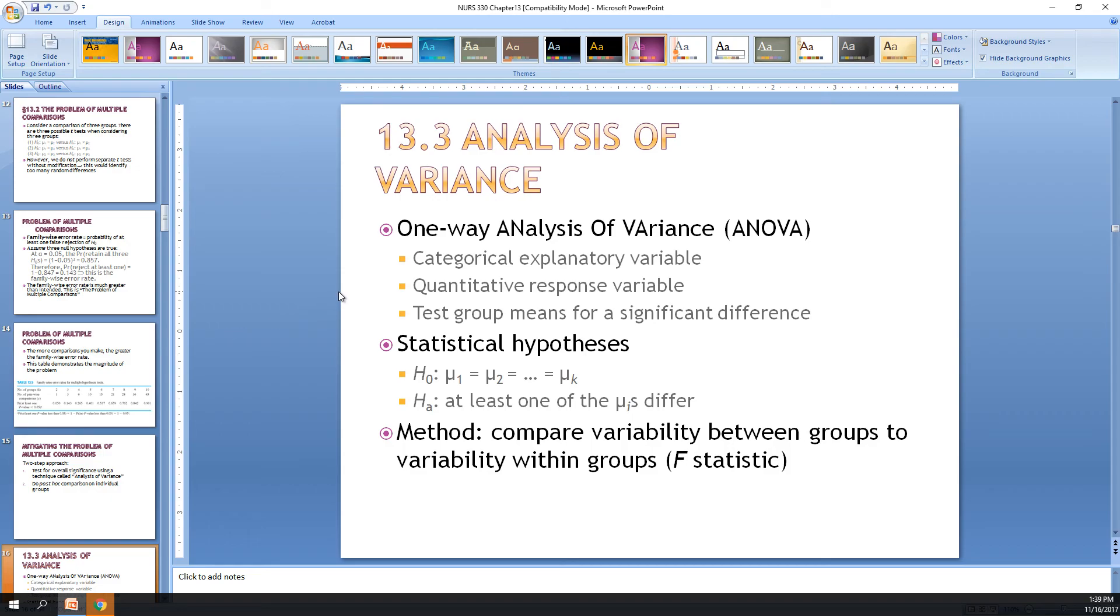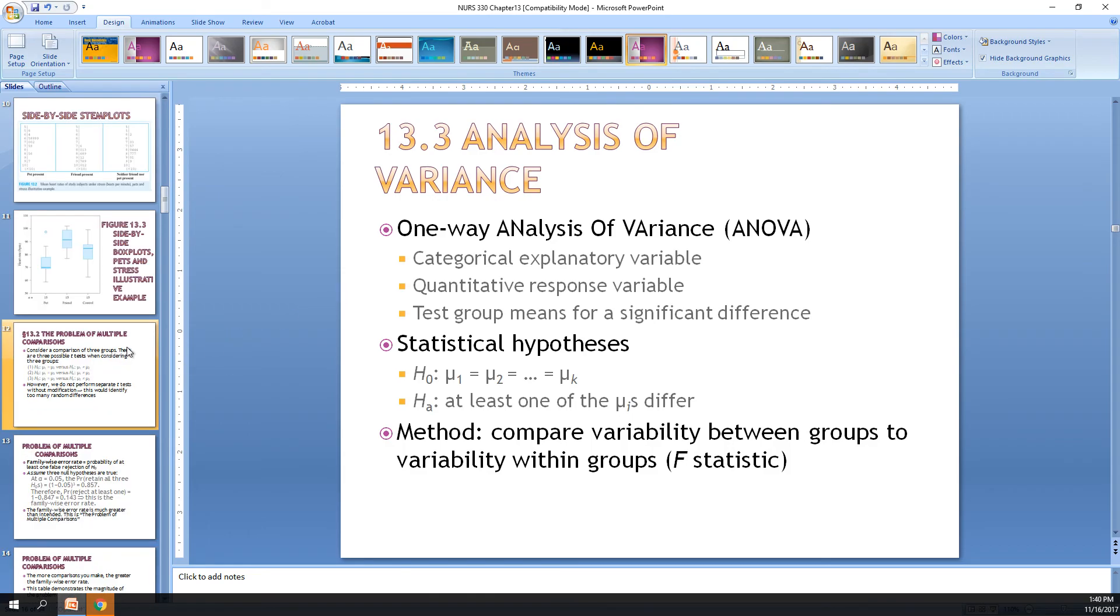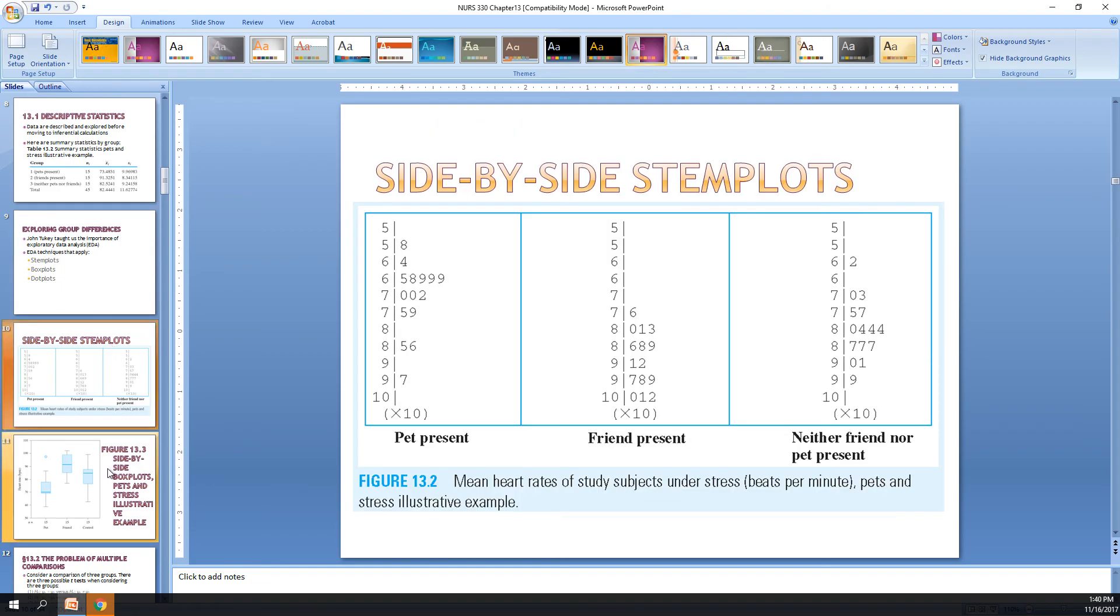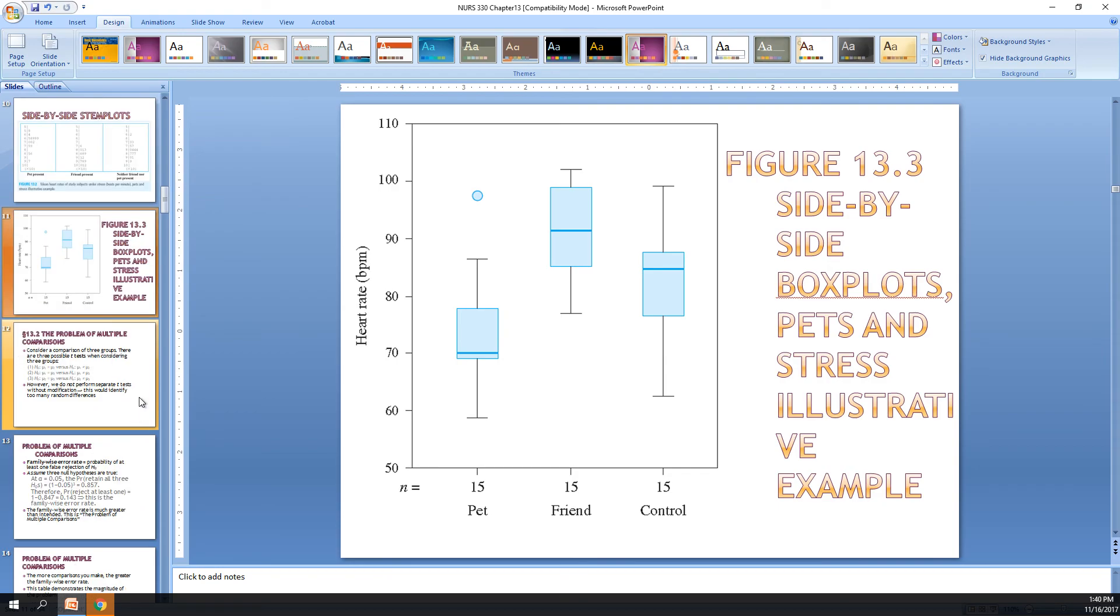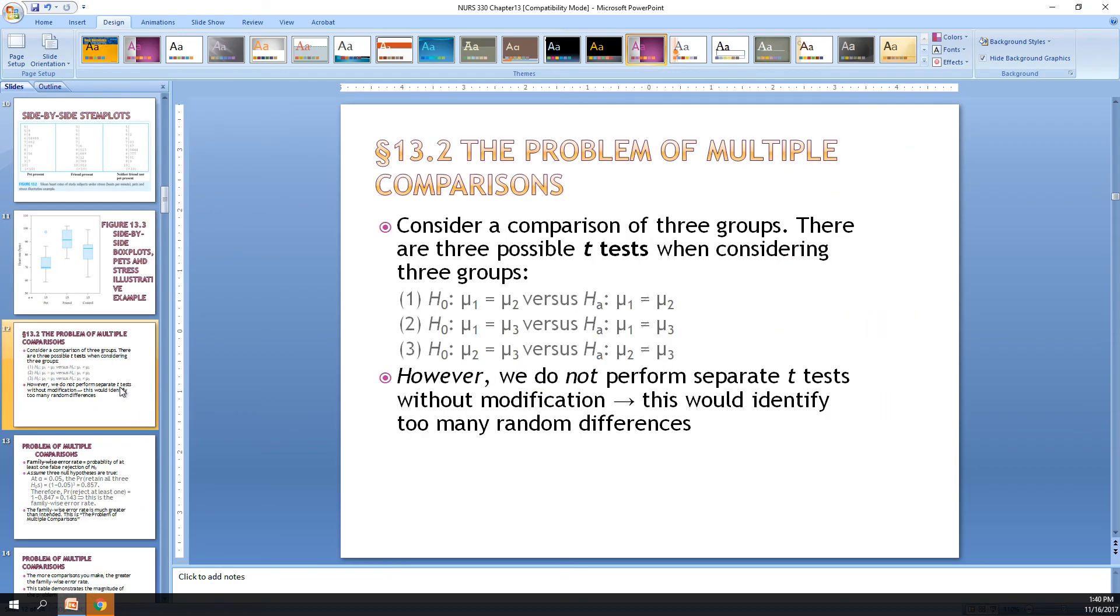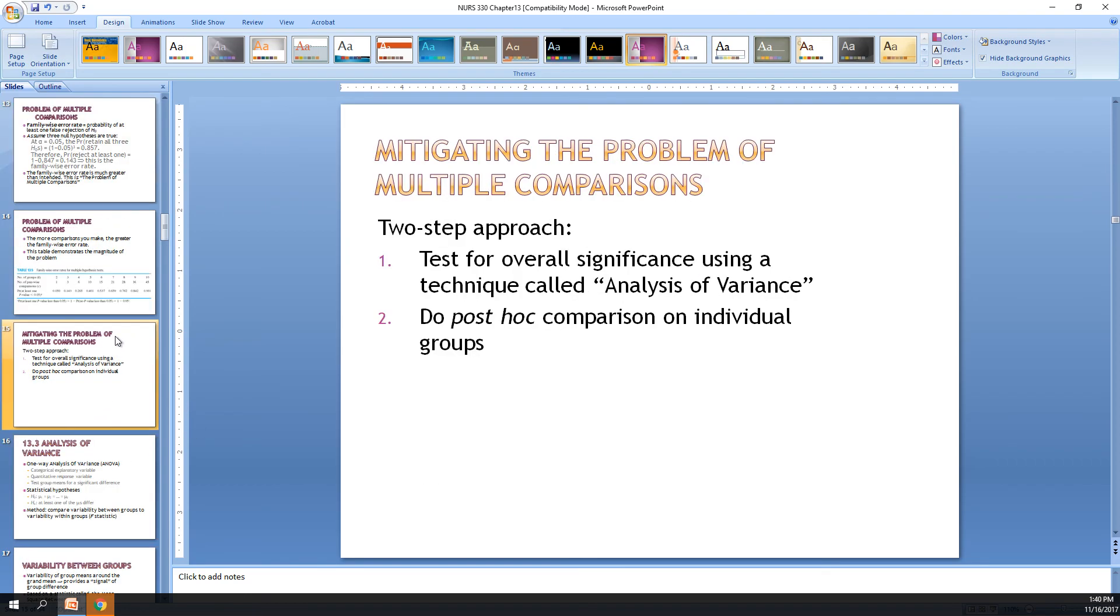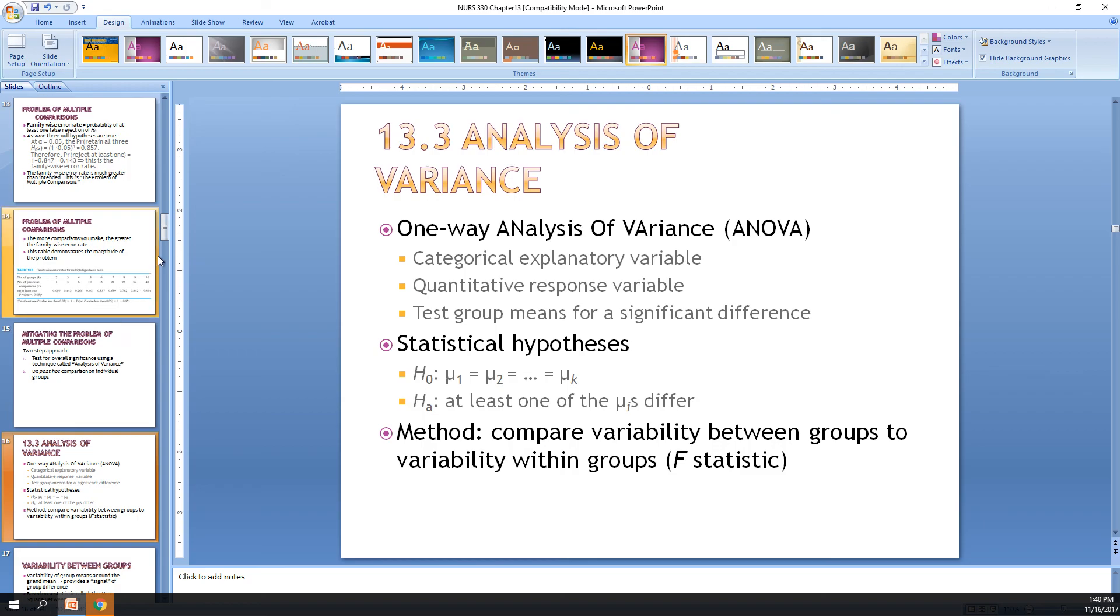Before we go into 13.3, because this will take a while, I'm going to end this video here. We mostly went over descriptive statistics, stem plots and box plots, looking at them, and then stating the problem: if you have more than two groups, this confounds the factor of having a higher probability of a type 1 error. The way we get around this is we test for overall significance using an ANOVA test or analysis of variance. I'm going to start the next video going into 13.3, which will start talking about ANOVA and how it's actually calculated.